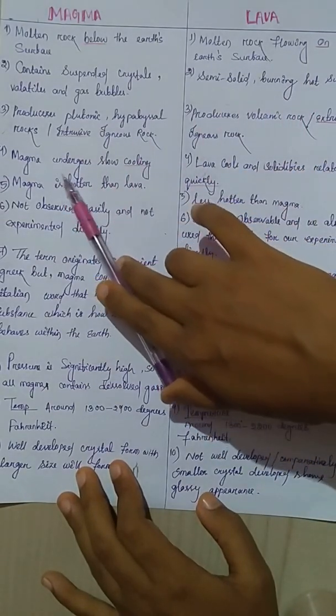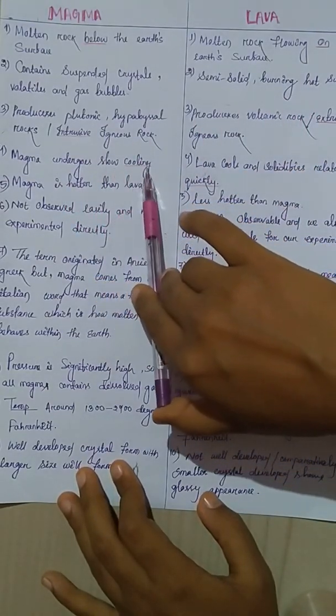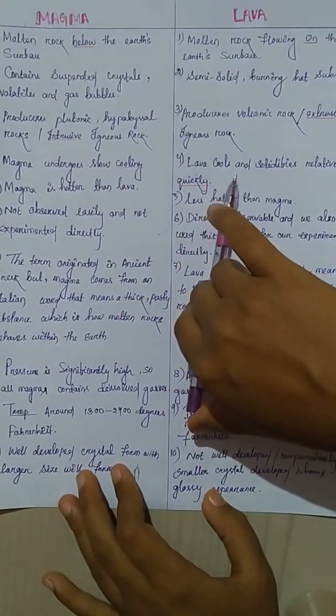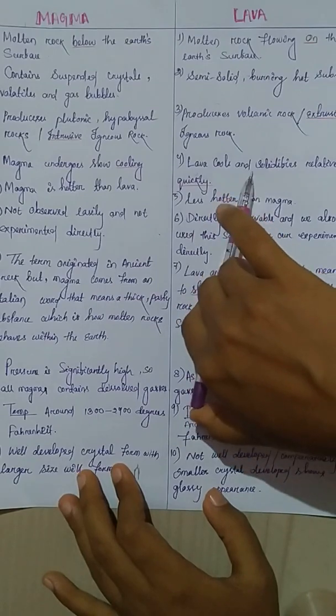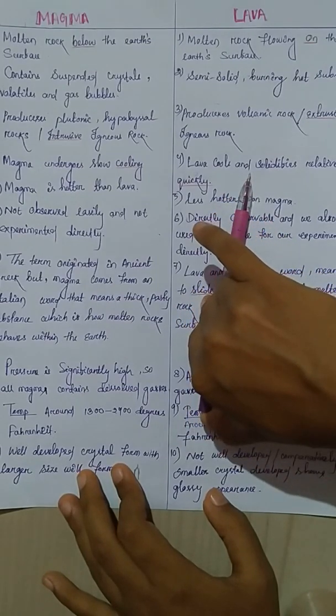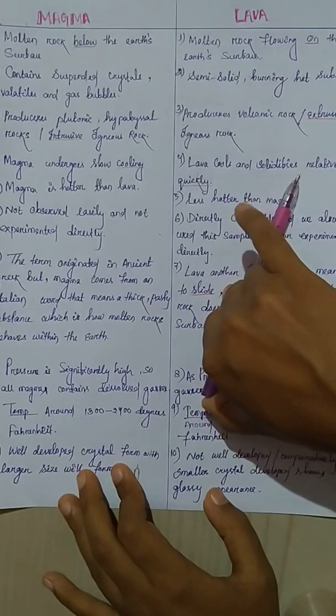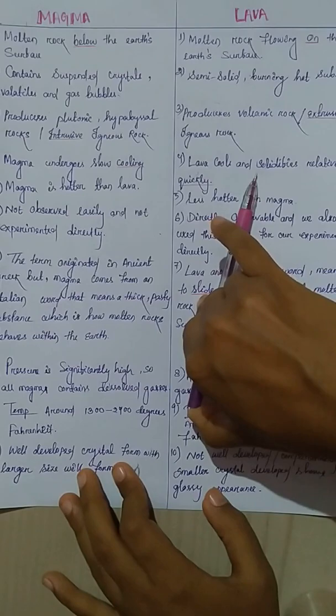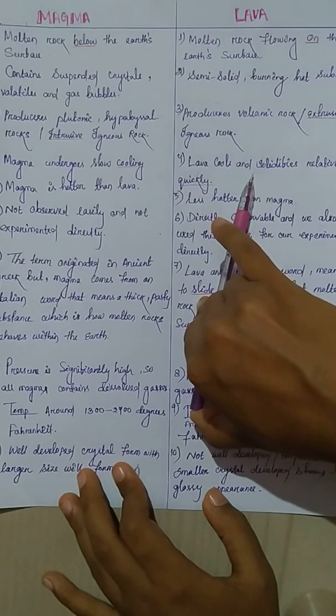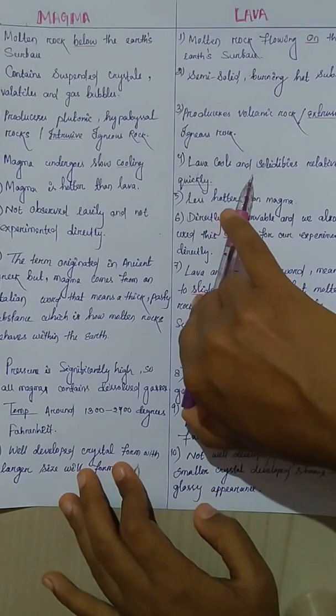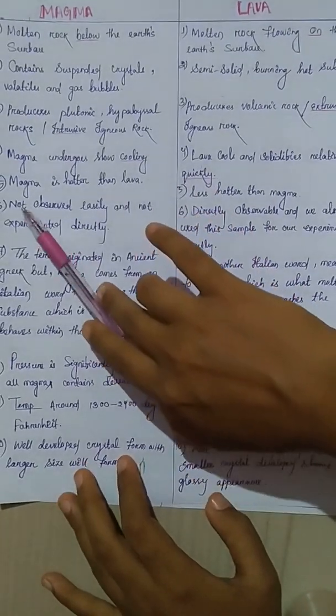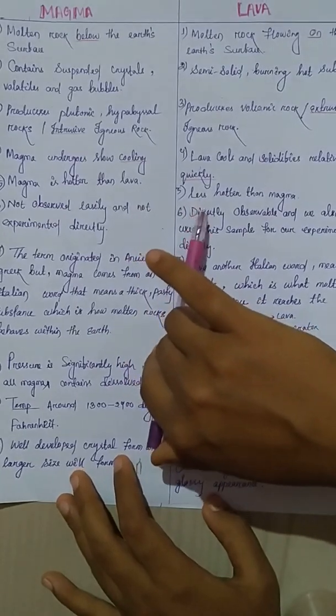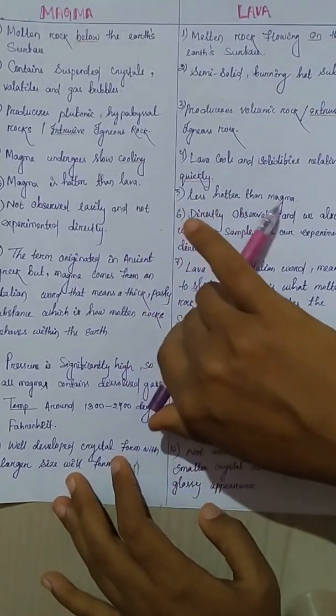In case of magma, it undergoes slow cooling rate. But in case of lava, it cools rapidly, quickly, which produces quench crystallization. It solidifies very rapidly. There is no time for new crystals to develop. It shows glassy appearance, obsidian in nature. Magma is hotter than lava.